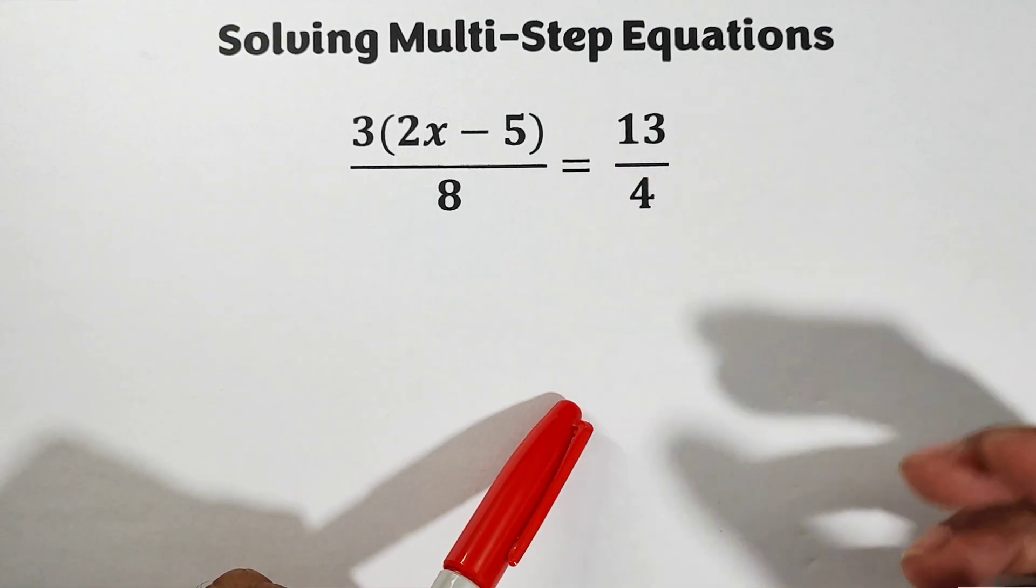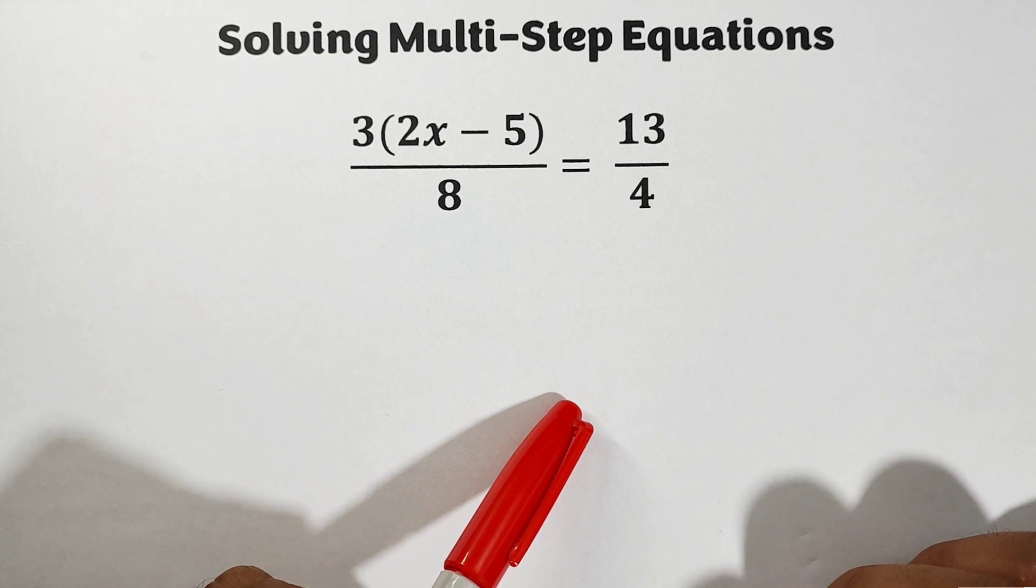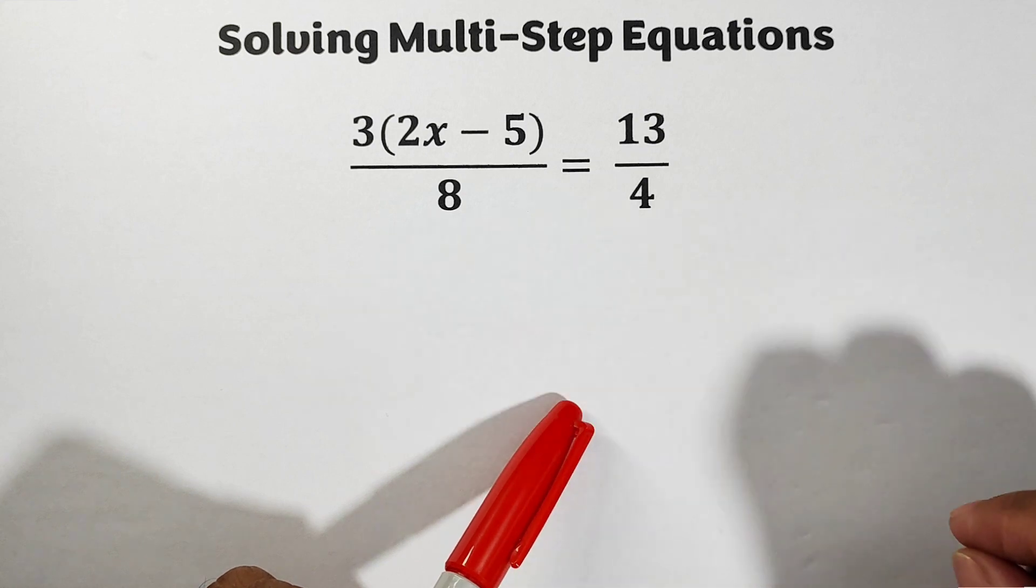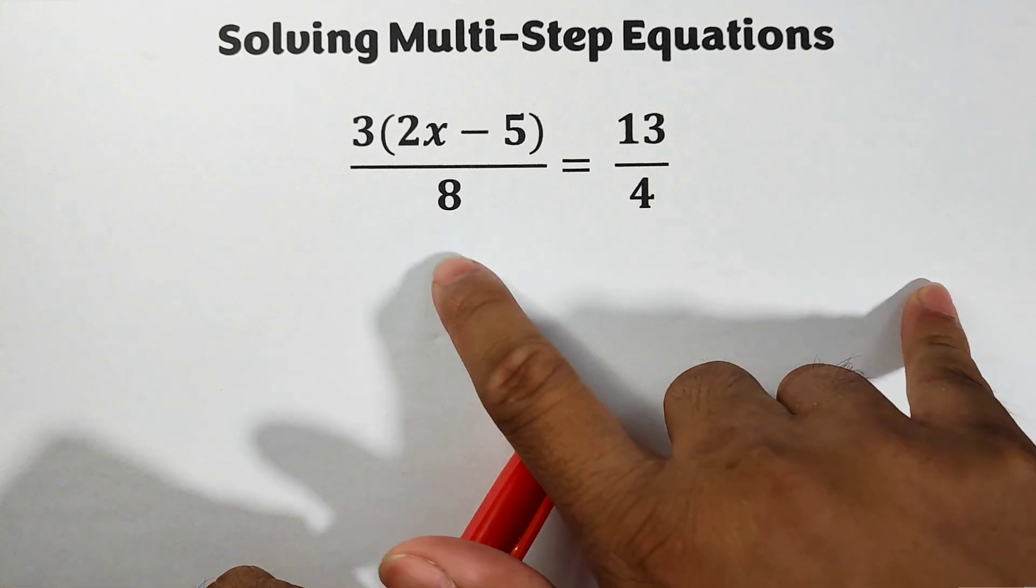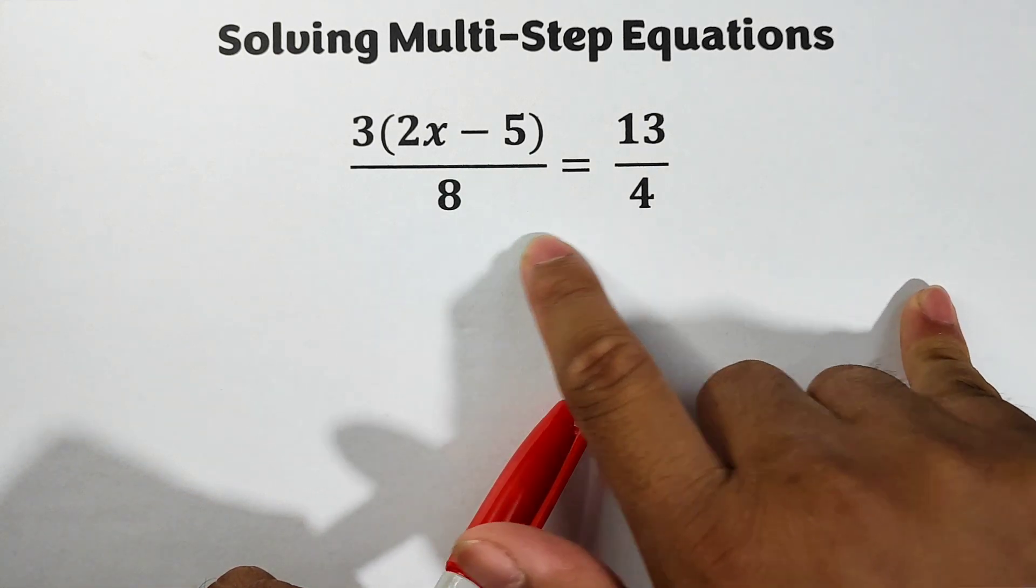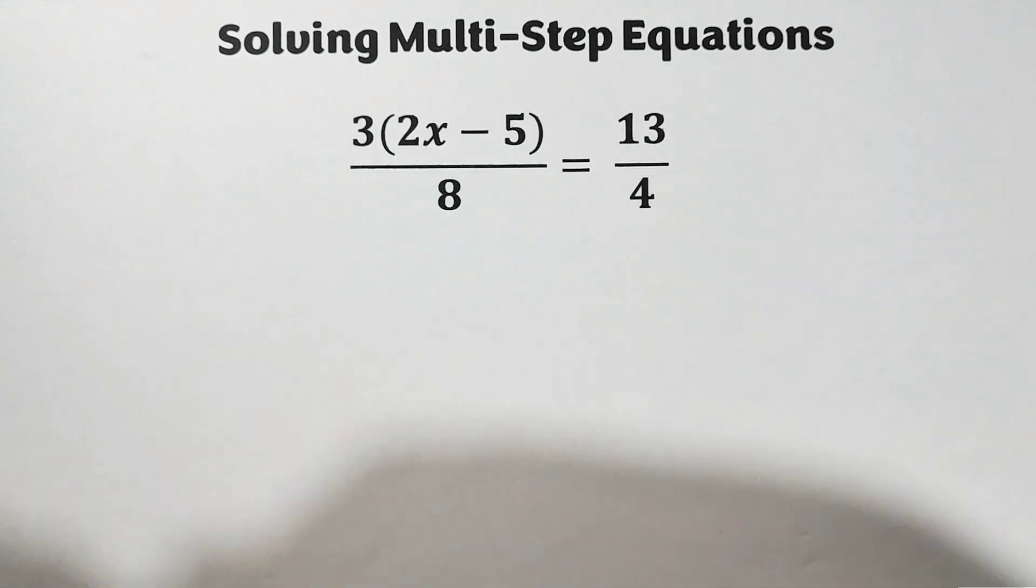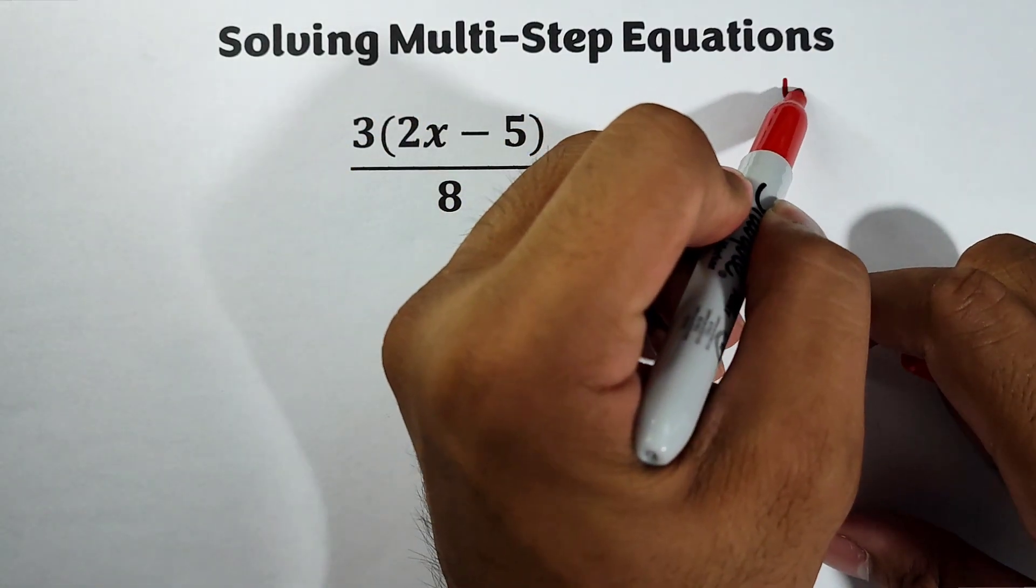For me, I will use multiplying it by LCD. The first denominator is 8 and the other is 4, meaning the LCD of this equation is equal to 8.